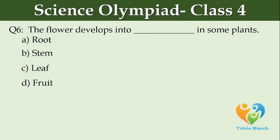The flower develops into dash in some plants. A: Root, B: Stem, C: Leaf, D: Fruit.